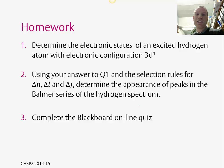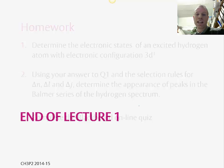So for homework, I'd like you to determine the electronic states of an excited hydrogen atom with an electronic configuration of 3D1. And then you can use that answer and the various selection rules. You can work out what a peak in the Balmer series of the hydrogen spectrum actually looks like. Is it just going to be one line? Or is it going to be a doublet? Or is it going to be a triplet? What's it going to look like? You can now work that out. Then if you can complete the Blackboard online quiz, and I will see you in the timetable session. So that brings me to the end of lecture one.